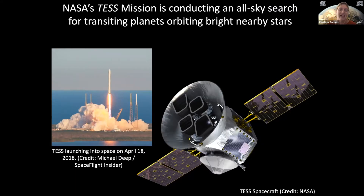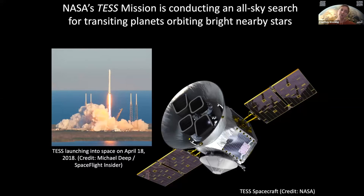TESS launched in April 2018 to conduct an all-sky survey for transiting planets orbiting bright nearby stars. Having spent the week thinking about radial velocity, you know why bright stars are important — it's because we'd like to measure the masses of these objects, and most of the stars observed by Kepler are just too faint for precise radial velocity observations. With TESS we're getting planets orbiting a broad array of stars in a wide variety of configurations, which will allow us to do more interesting studies of the composition of planetary atmospheres and interiors and how that varies with stellar properties — including planets in clusters, planets orbiting low-metallicity or high-metallicity stars, and low-mass and high-mass stars.